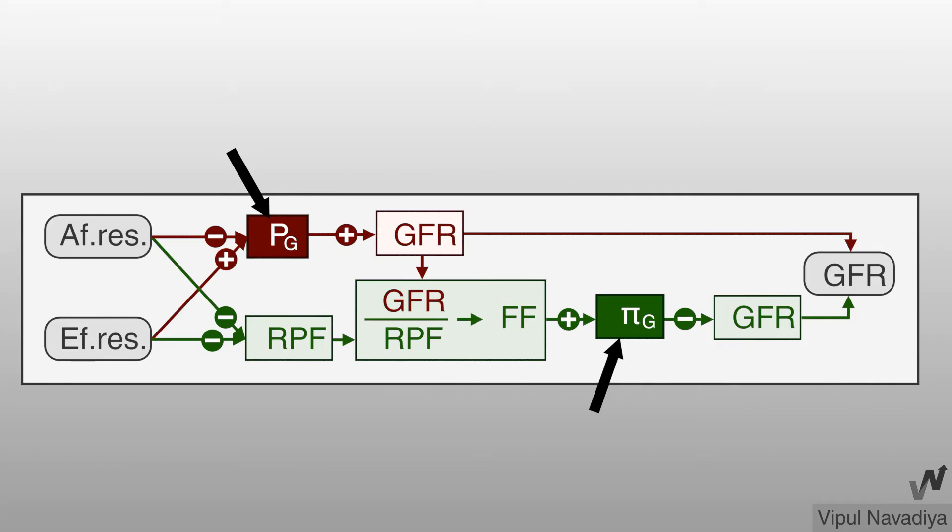In the previous video, we saw that glomerular capillary hydrostatic pressure and colloid osmotic pressure are the most important determinants of GFR. Both of them in turn are regulated by afferent and efferent arteriolar resistance.